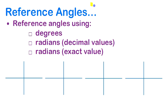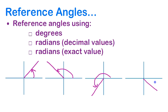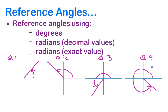We're now at the concept of reference angle for a given angle. The reference angle is the little angle. If you have an angle in standard position, let's draw one in each of the quadrants. The reference angle is the acute angle that you get between the terminal arm and the x-axis — the smallest angle that you can make with the x-axis.